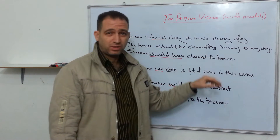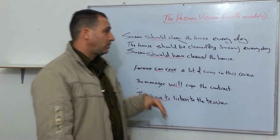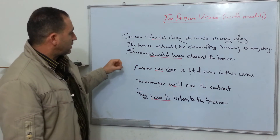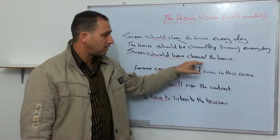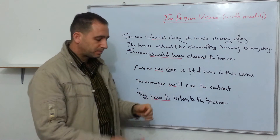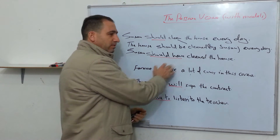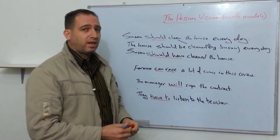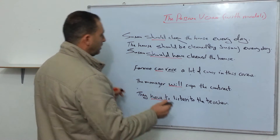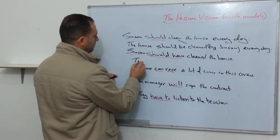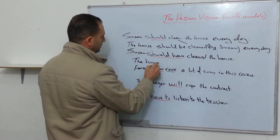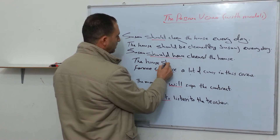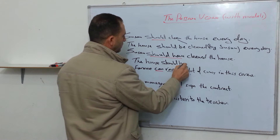Now, the 'by' phrase is actually optional — it depends on you. You can mention it or there's no need; it's up to you. Here's another sentence: 'Susan should have cleaned the house.' Here I have something called a past modal. I still have two helping verbs: should and have. I focus on the object, take it and put it at the beginning: the house. Then I add my helping verbs: should have.